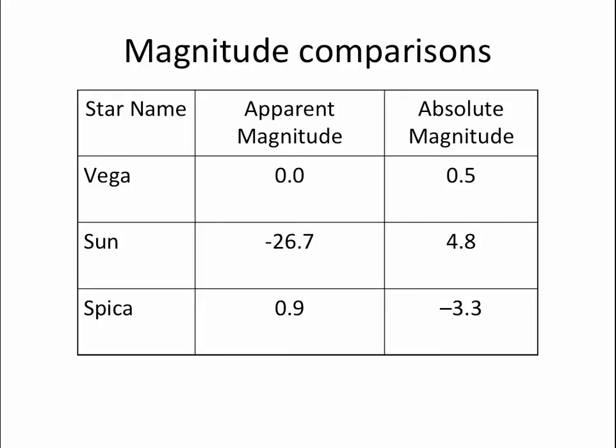The Sun has an apparent magnitude of minus 26.7 — tremendously brighter than Vega in our sky — but that's also because the Sun is tremendously closer to us than Vega. If we move the Sun to a distance of 10 parsecs, its magnitude would be 4.8. That's its absolute magnitude, and that would be a relatively faint star — just barely visible on a really dark night, and no one would think anything special about it. So comparing absolute magnitudes, Vega is actually putting out more energy than the Sun by quite a bit.